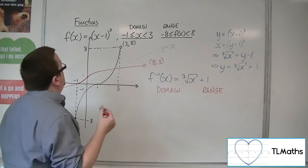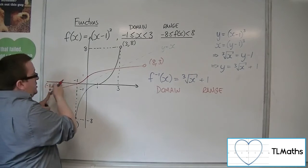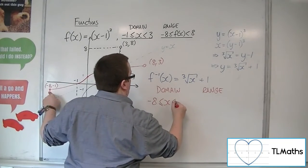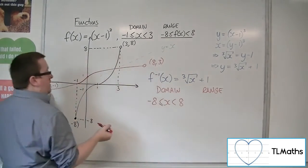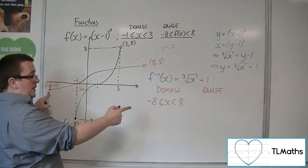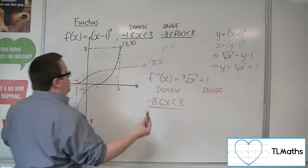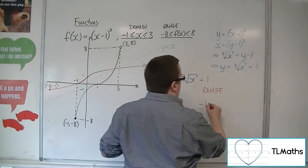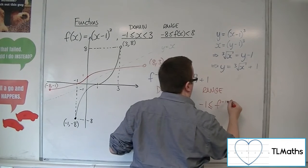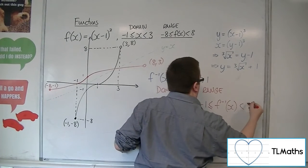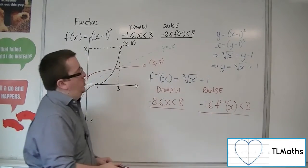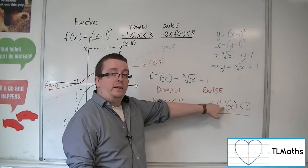So, the domain is going from minus 8 up to 8, including minus 8, but not including 8. And the range is going between minus 1 and 3. So, including minus 1, but excluding 3. Notice how my range is written with f minus 1 of x.